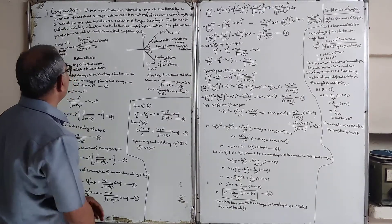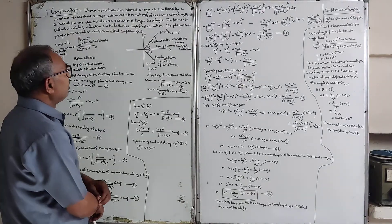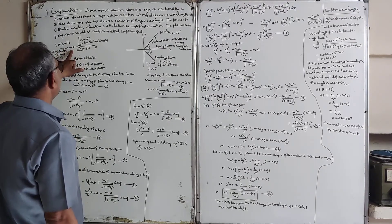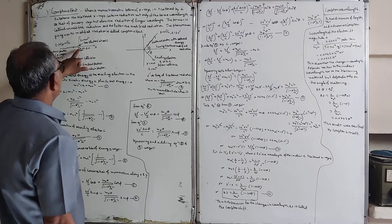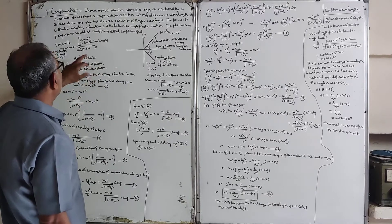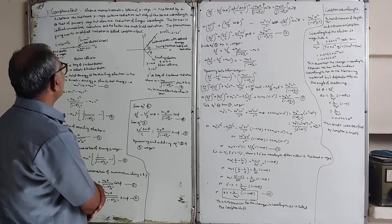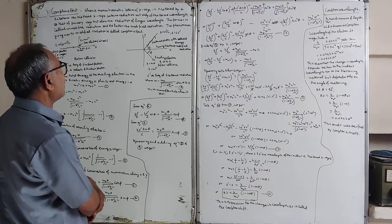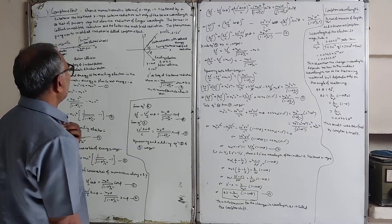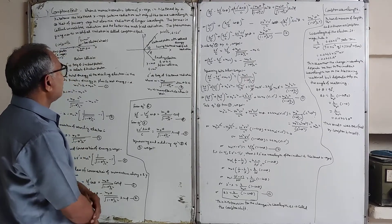Today we are going to discuss the Compton effect. When a monochromatic beam of X-rays is scattered by a substance, the scattered X-ray contains radiation not only of the same wavelength as the primary rays but also radiation of longer wavelength. The former is called the unmodified radiation and the latter the modified radiation. The phenomenon giving rise to the modified radiation is called the Compton effect.